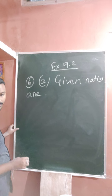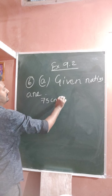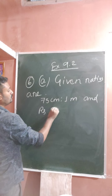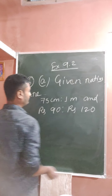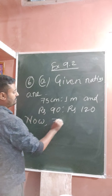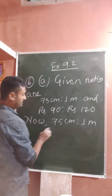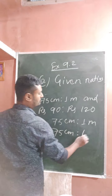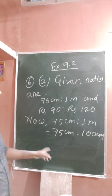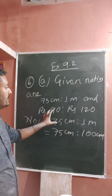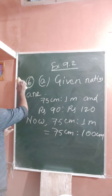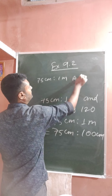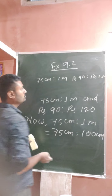The given ratios are: first one is 75 centimeters to 1 meter, and the second one is rupees 90 to rupees 120. Since centimeters and meters are different units, let's convert 1 meter into centimeters. So the first ratio becomes 75 centimeters to 100 centimeters.